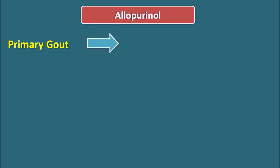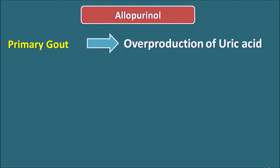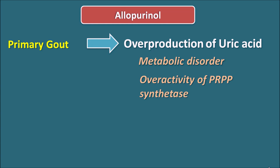Primary gout is a condition where there is overproduction of uric acid. It is a metabolic disorder associated with excessive synthesis of purines followed by their metabolism, leading to increased uric acid levels. One enzyme related to this disorder is the overactivity of PRPP synthetase, responsible for increased biosynthesis of purines, which results in uric acid as the metabolic end product.